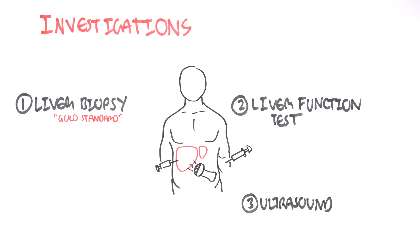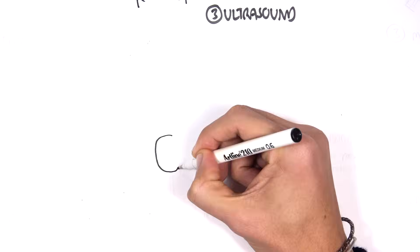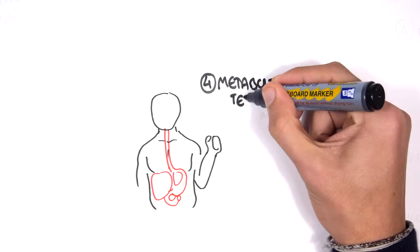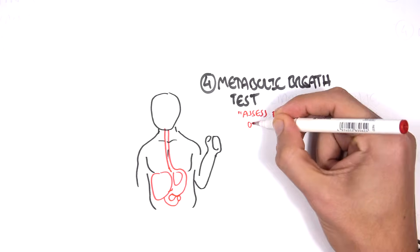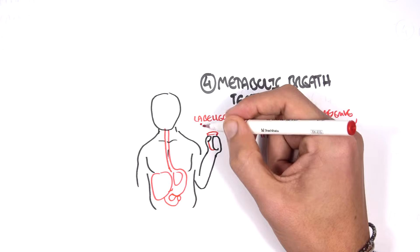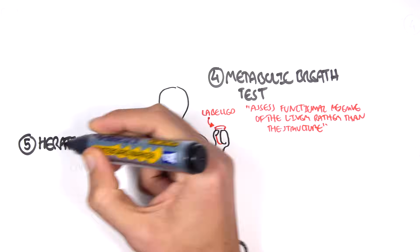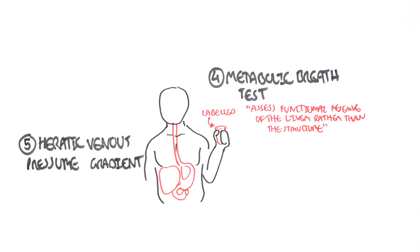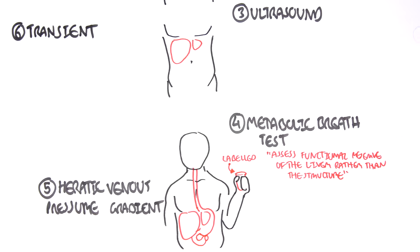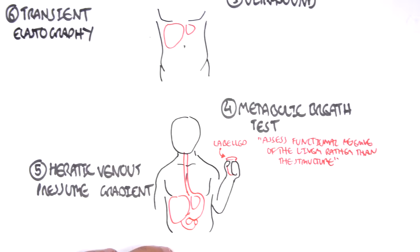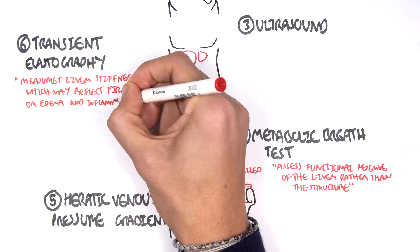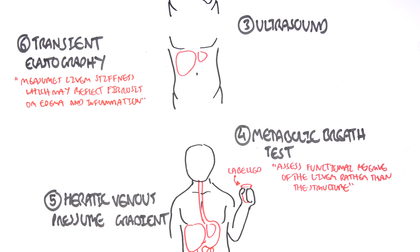Here you're looking at liver architecture. Number four, you can perform a metabolic breath test. This is to assess functional reserve of the liver rather than the structure. Number five, you can perform a hepatic venous pressure gradient. And finally, you can also perform a transient elastography.